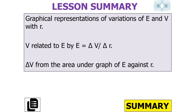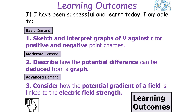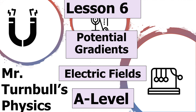So from your graphs in electrical fields, you need to be aware of two key properties: if you have an electrical potential and distance graph, the gradient of the line is the electrical field strength; if you have an electrical field strength and distance graph, the area under the line equals the potential difference experienced in the field. We should now understand the graphical representations of variations of E with R and V with R, and know that V is related to E by E equals potential difference over change in distance, with the potential difference obtained from the area under the E-R graph. I hope you've enjoyed today's lesson looking at potential gradients — have a lovely day.